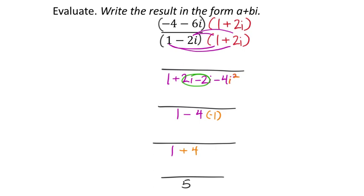Now we've got to do the numerator. I guess I'll do this one in green. And so I start with negative 4 times 1, which would be negative 4. And I've got negative 4 times 2i, which would be negative 8i. And then I've got negative 6 times 1, which would be negative 6i times 1, which would be negative 6i.